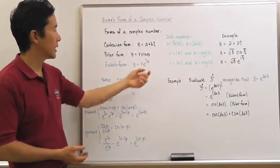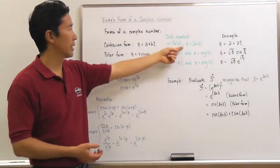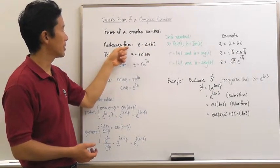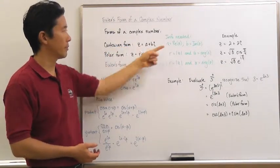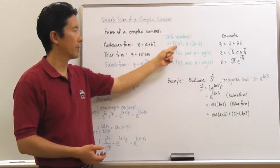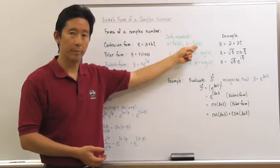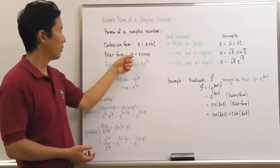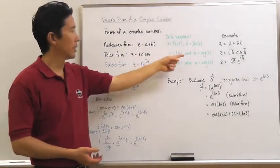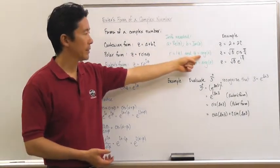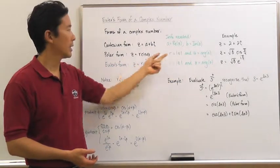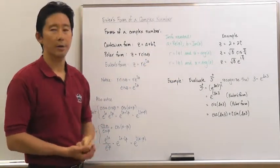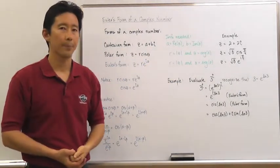The information needed to get a complex number in its Cartesian form is the real part of z and the imaginary part of z. For the polar form, we need the argument of z and the modulus of z, giving us z is equal to R cis theta.